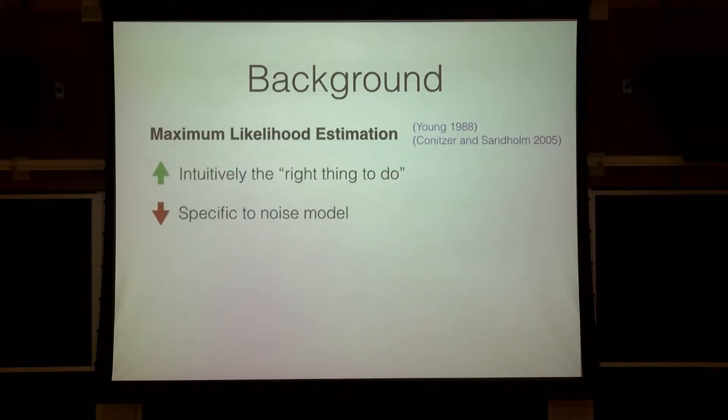A very quick overview of the background literature on making objective opinions. The very first thing people did, this dates back to the 18th century, when the Marquis de Condorcet actually started thinking about this problem. Basically, the first thing and intuitively the right thing to do is to look at MLE. So given a specific noise model under which people vote, you want to return the single most likely ranking or subset or alternative that is likely to be correct. The downside of this is that it's very specific to the noise model. And if you don't have the right noise model or can't actually fit a noise model to the votes in practice, it actually doesn't work at all.